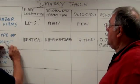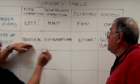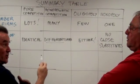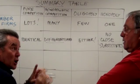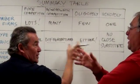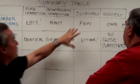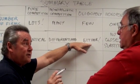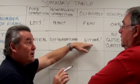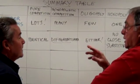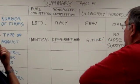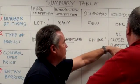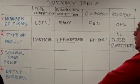In terms of the type of product: pure competition has identical or homogenous products. Monopolistic competition has differentiated products — close but not perfect substitutes — like different apples. In oligopoly it can be either homogenous, like oil, or differentiated, like athletic footwear. There's also mutual interdependence. And for monopoly, no close substitutes — only one product, mono meaning one.